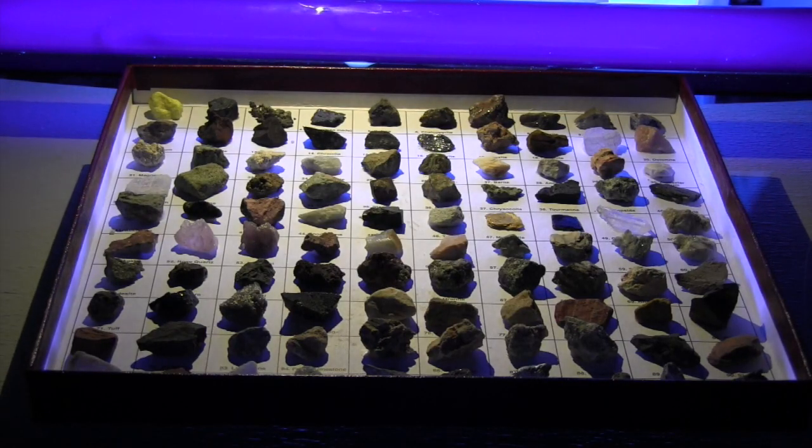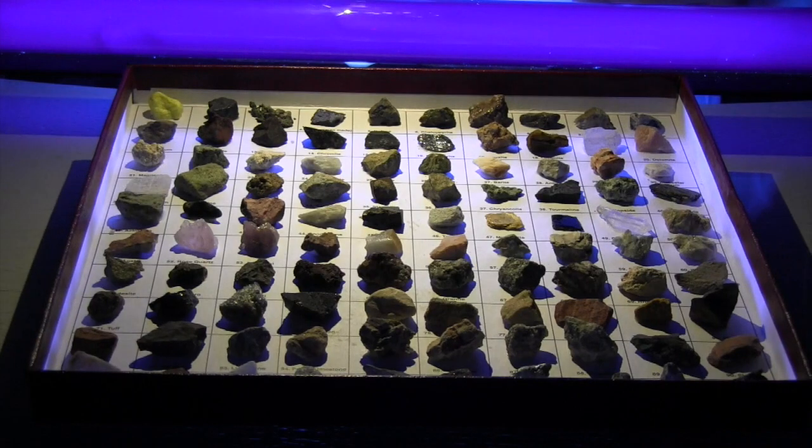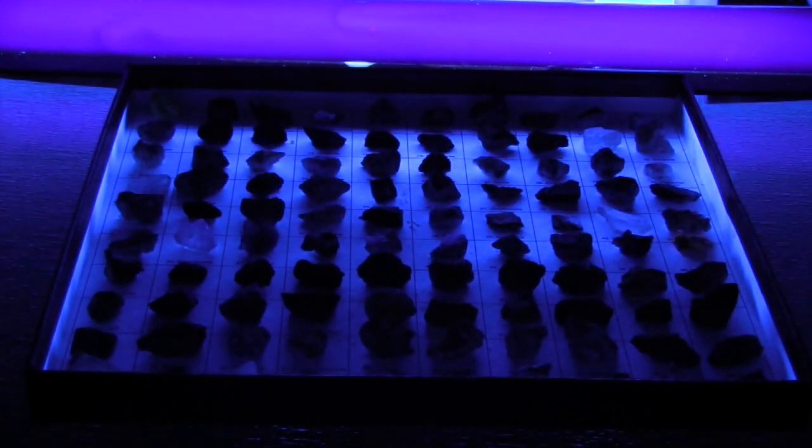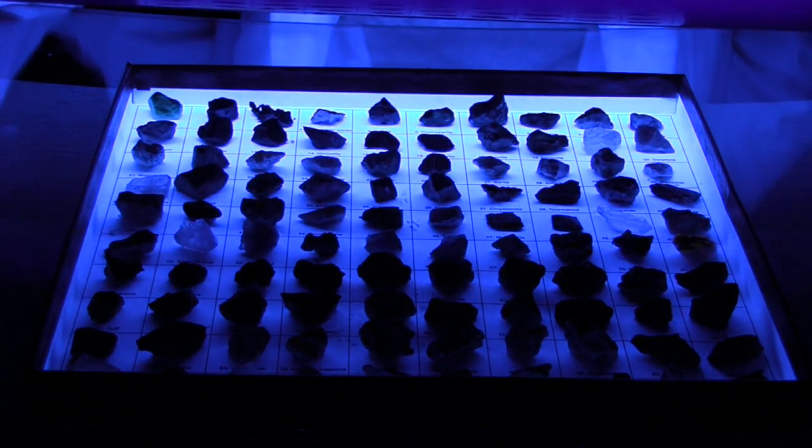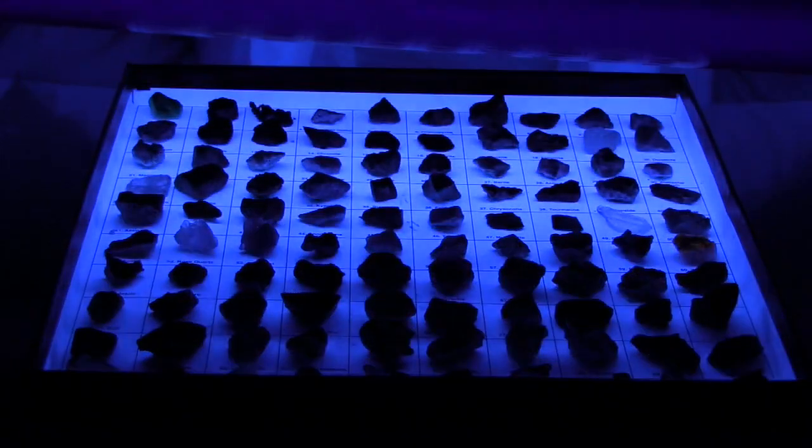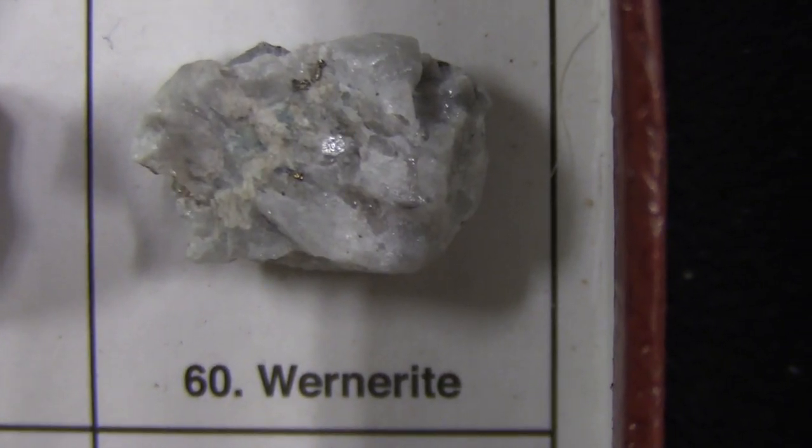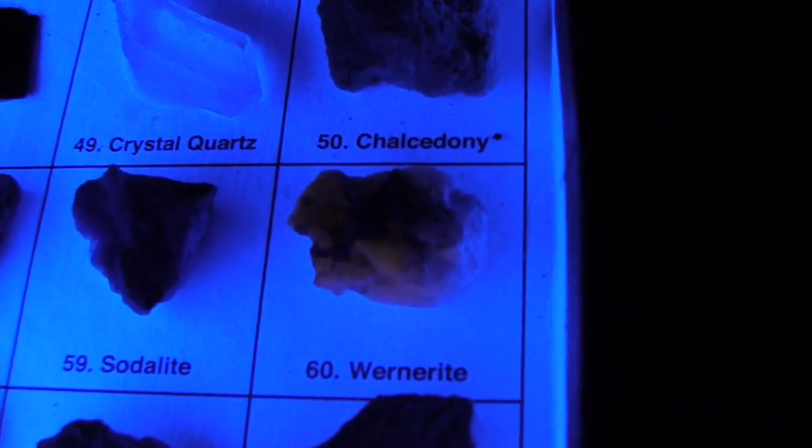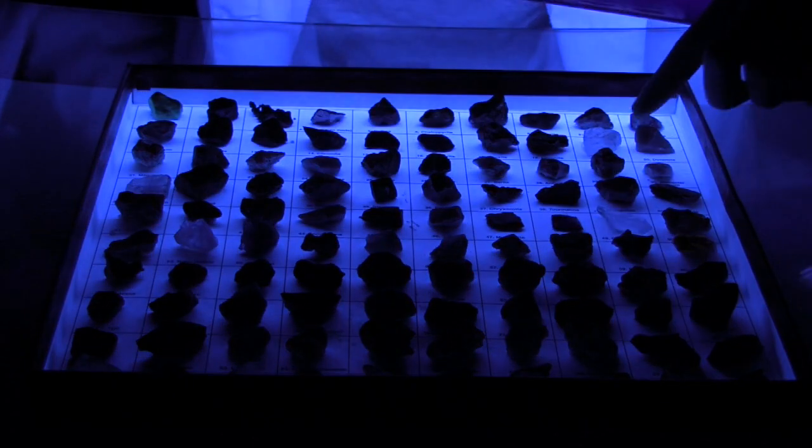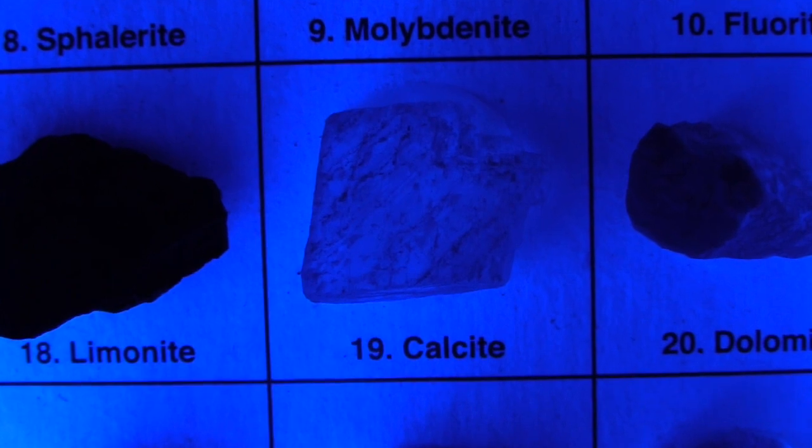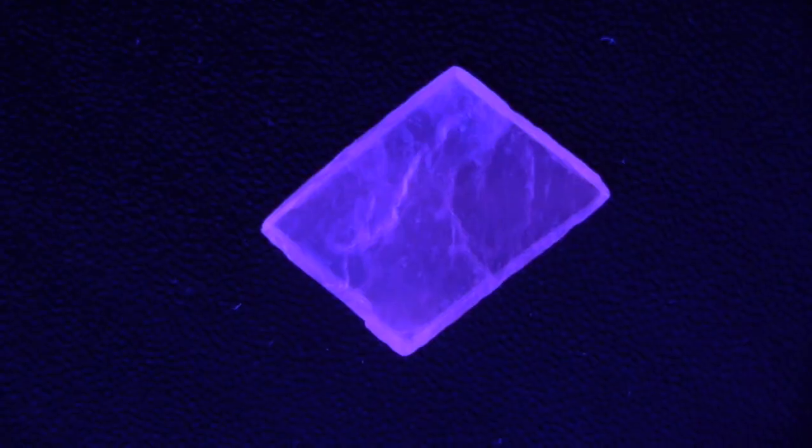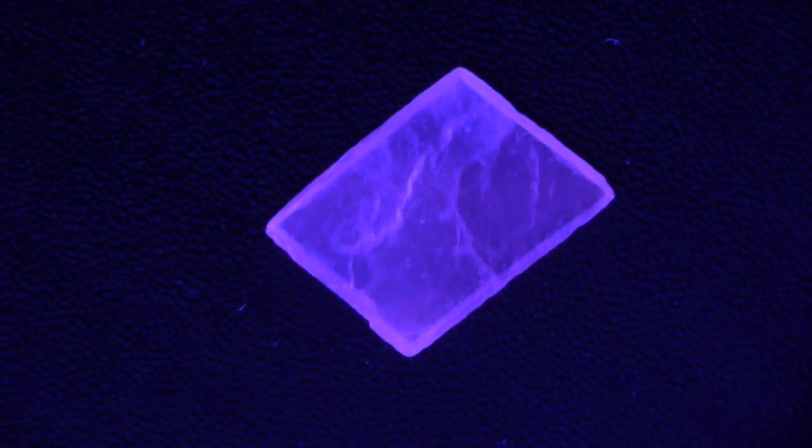As you can see here we have a full field guide of different rocks and minerals. However, once we switch over to black light only two of the minerals show any sort of fluorescence. That would be here this calcite and here wernerite. Wernerite is showing a lightish pink color around its edges and calcite a very dim blue. This is interesting considering how the Icelandic spar calcite reacts with a bright pink color.